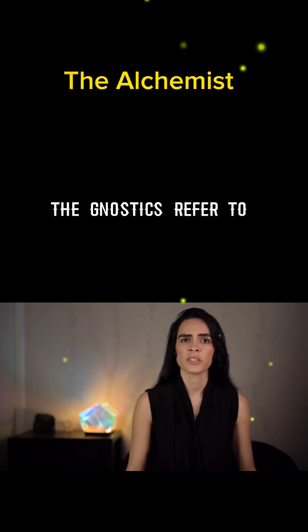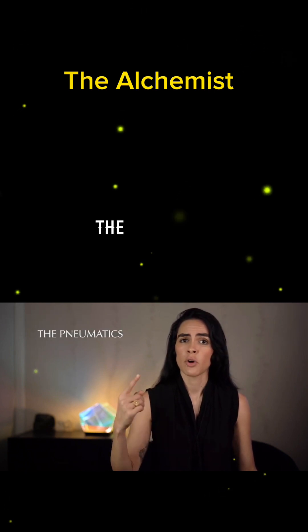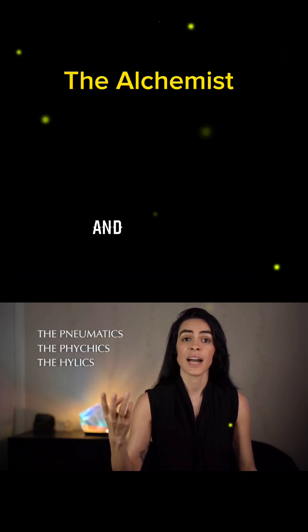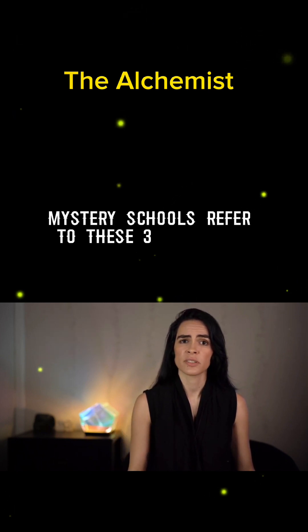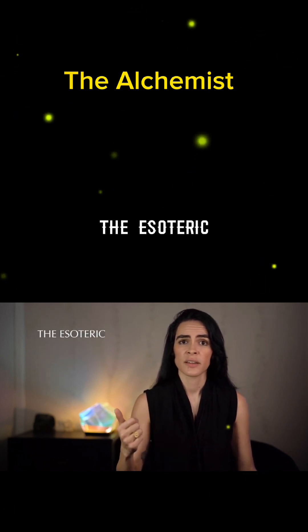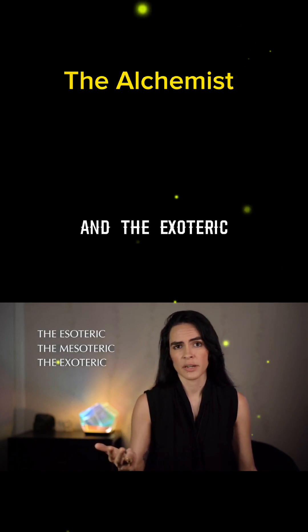The Gnostics refer to these three soul groupings as the pneumatics, the psychics, and the hylics. Mystery schools refer to these three circles as the esoteric, the mesoteric, and the exoteric.